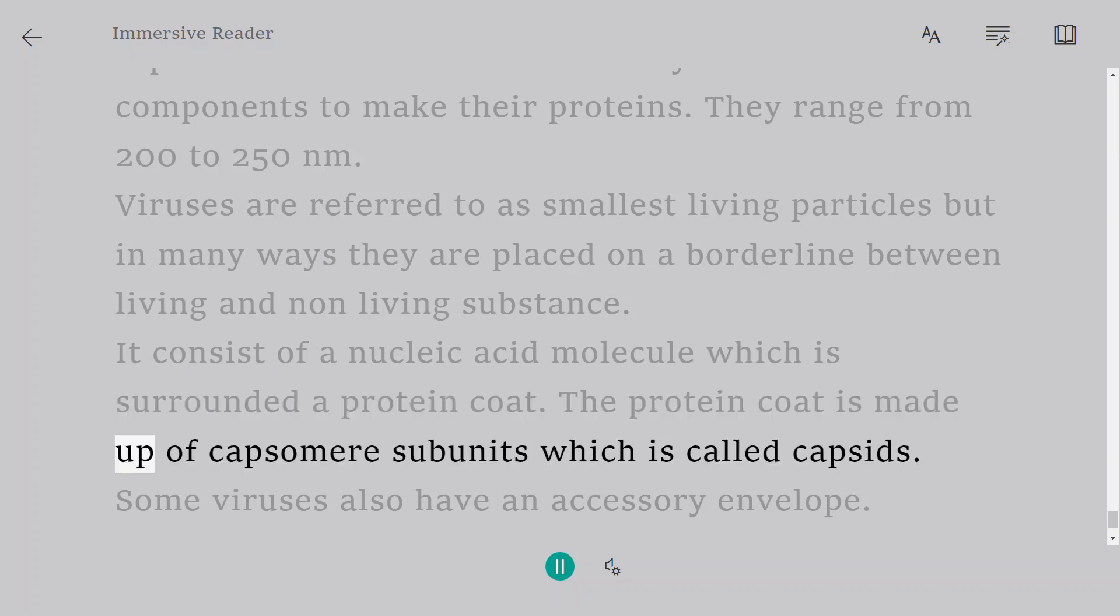It consists of a nucleic acid molecule which is surrounded by a protein coat. The protein coat is made up of capsomere subunits, which is called capsids. Some viruses also have an accessory envelope.